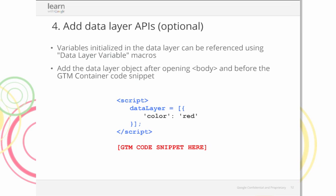Step four: adding the data layer APIs. To ensure maximum flexibility, Google Tag Manager functions best when deployed alongside a data layer — an object containing all the information you want to pass to Google Tag Manager. Information such as events or variables can be passed via the data layer, and rules can be set up based on variable values or specific events. The data layer must be situated above the Google Tag Manager snippet but directly below the opening body tag. The blue code is initialization, black is an example data layer object, and red is where the GTM snippet should lie.